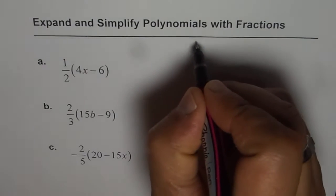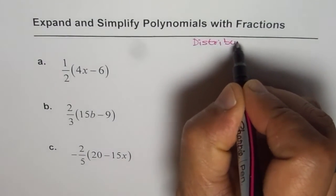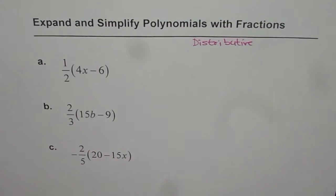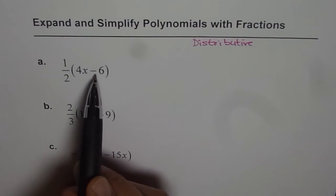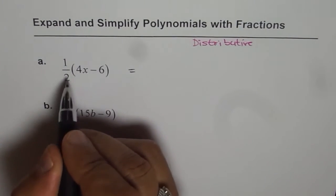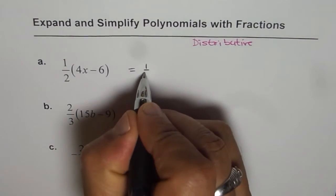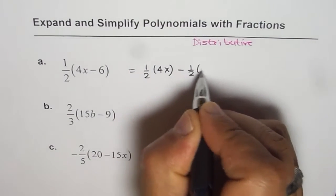So we'll apply distributive property to expand these polynomials. The first term is half times 4x minus 6. So basically we'll multiply 4x and minus 6 by half. We can write this as half times 4x minus half times 6.